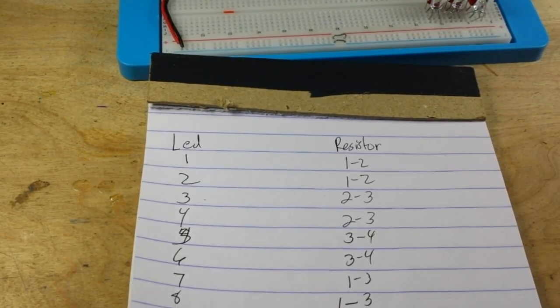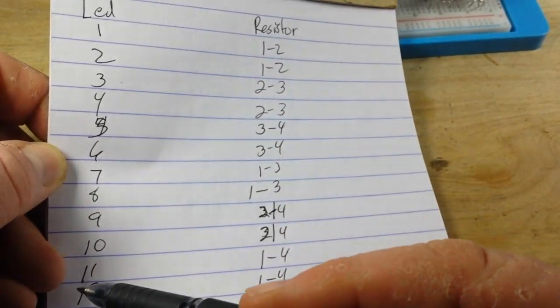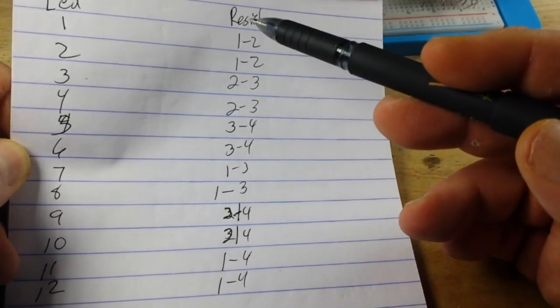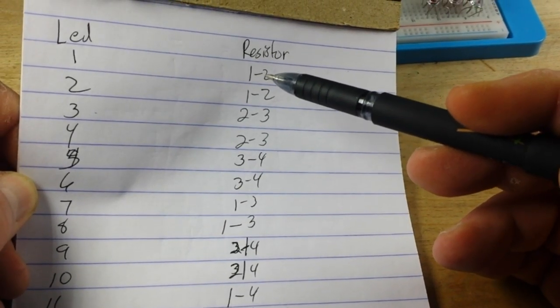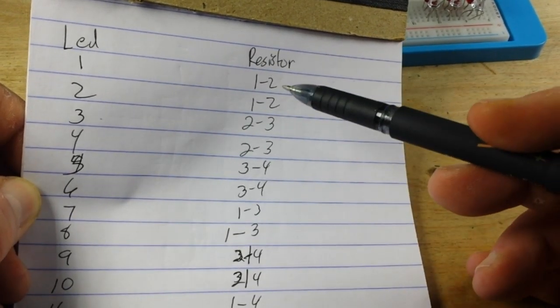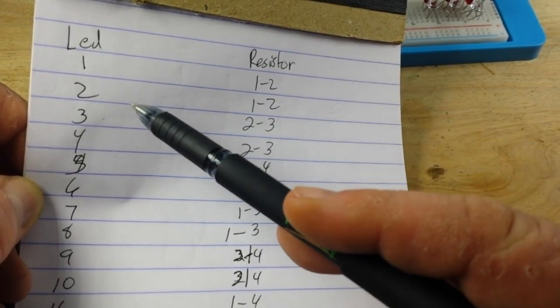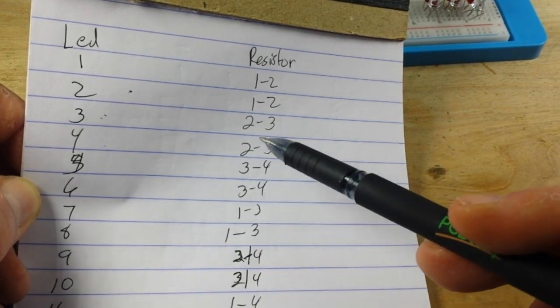Okay, I hope this makes some sense to you. Here's our LEDs down here, 1 through 12. And then here's which resistors they attach between. So, resistors 1 and... LEDs 1 and 2 attach between resistors 1 and 2. 3 and 4 attach between 2 and 3.